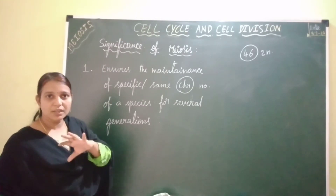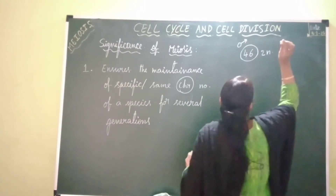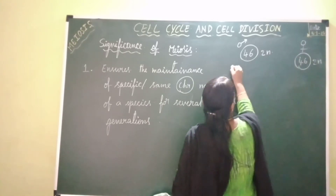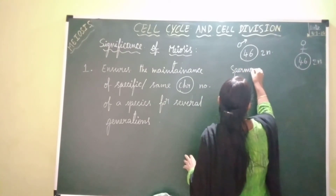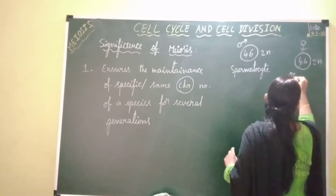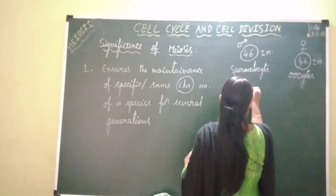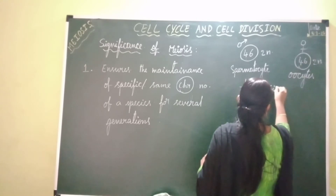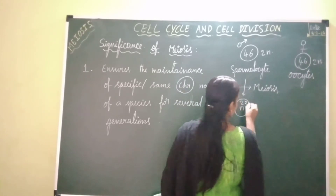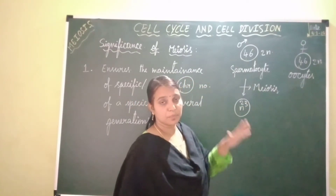So let's say this is a human male parent. In the male parent, there are 46 chromosomes in the spermatocyte, and in the female parent also, there are 46 chromosomes in the oocyte. Spermatocytes undergo meiosis, and after meiosis, sperms or male gametes are formed. These male gametes will be haploid with a chromosomal number of 23, because meiosis is a reduction division where the number of chromosomes is reduced to half.